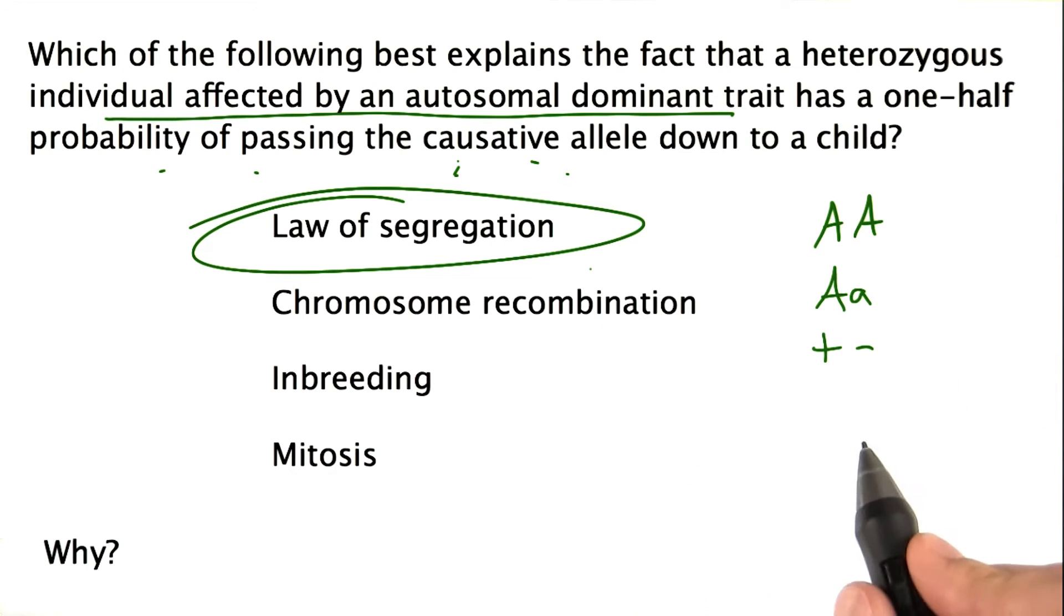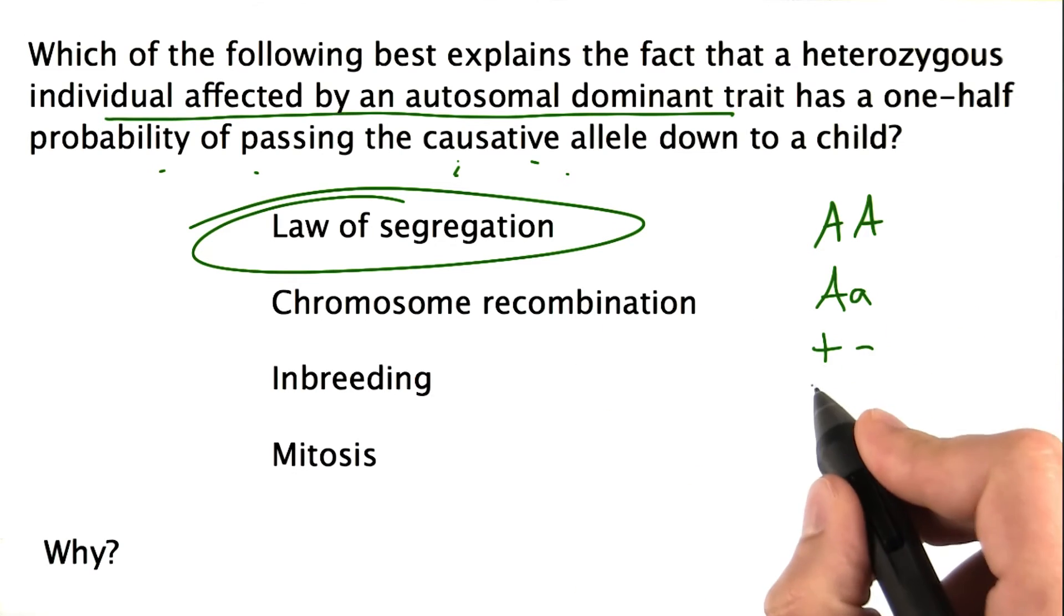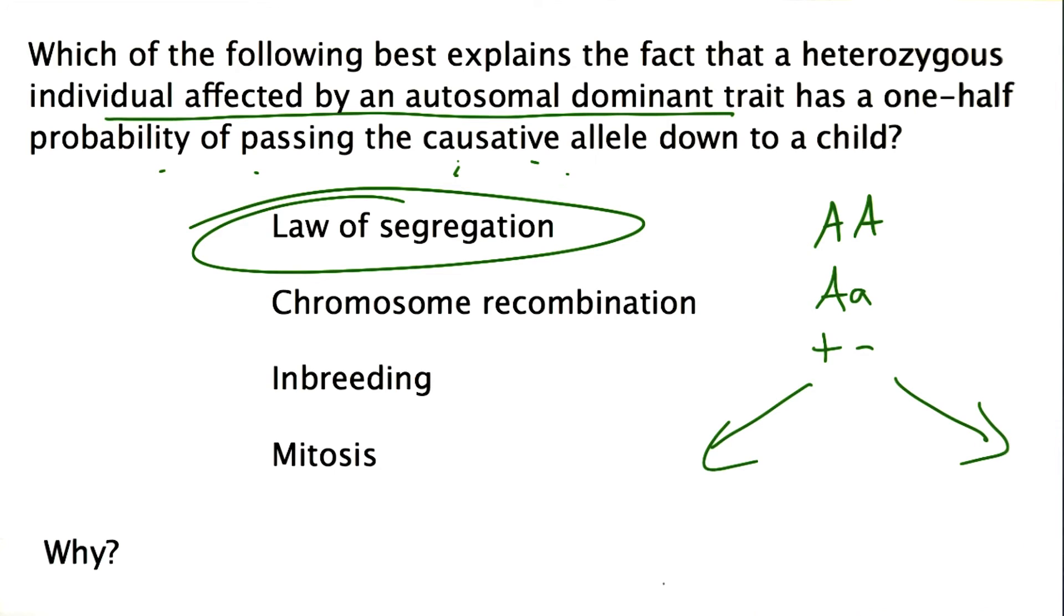It says that during meiosis, all the allele pairs line up and then one goes to one gamete and one's going to go to the other.